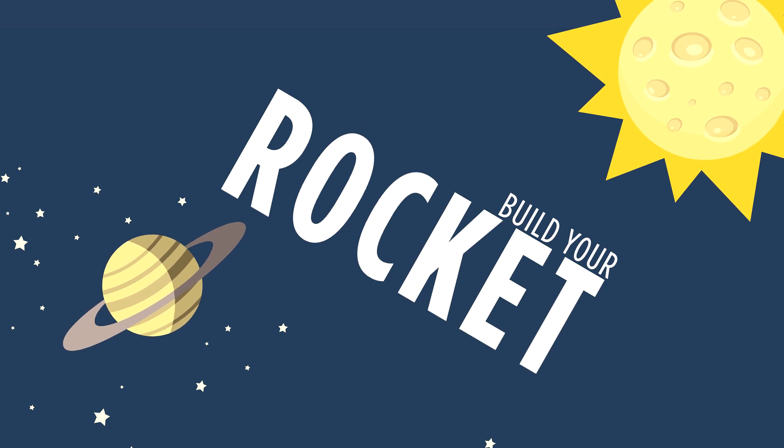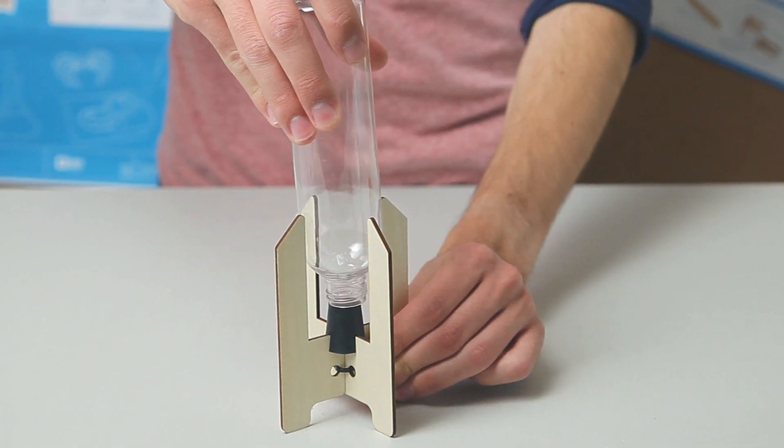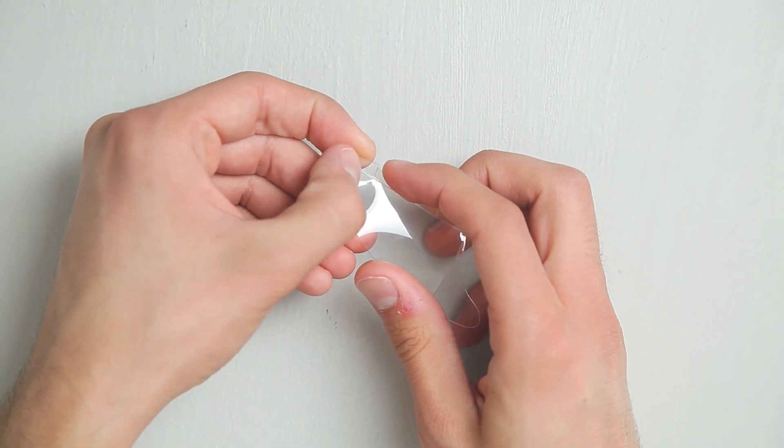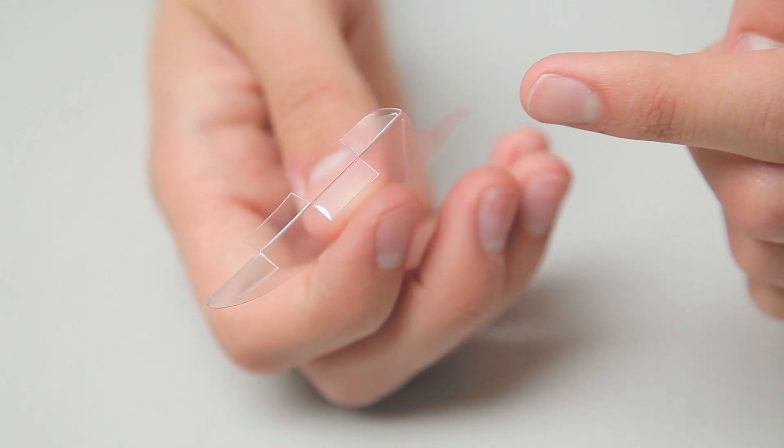Next, let's build your rocket. Press the bottle down onto the launcher. Fold the four flaps on the backside of the fins so that they're going in alternating directions.